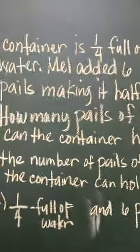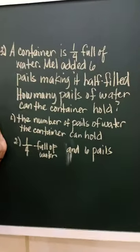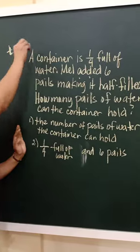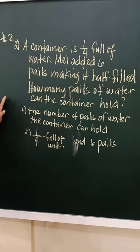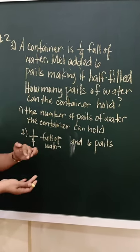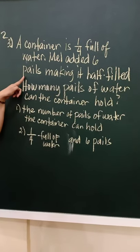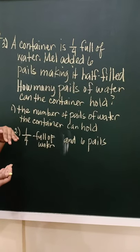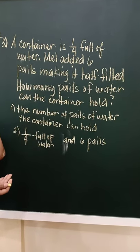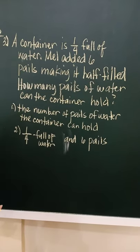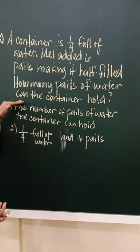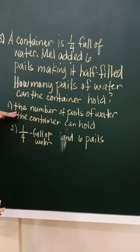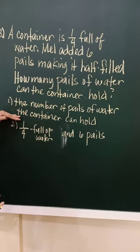Last problem. By the way, children, this problem is similar to the problem in your module 1B in additional activities number two. Only the names are changed, and the fraction. A container is one-fourth full of water. Then Mel added six pails, making it half-filled. So Mel added to the water in the container, six pails. Then, after adding, it became half. So, the problem is asking for number of pails of water the container can hold.